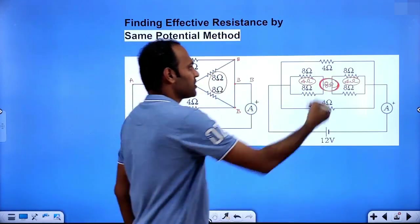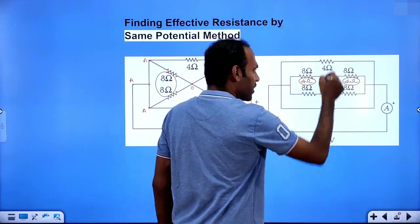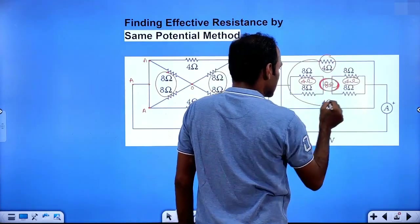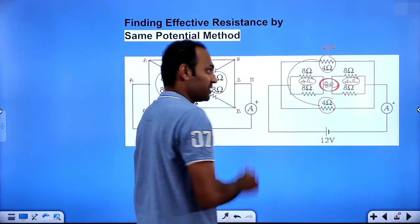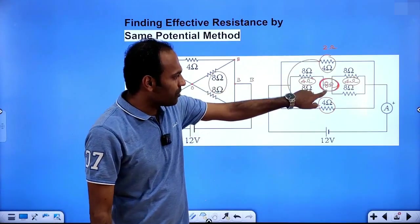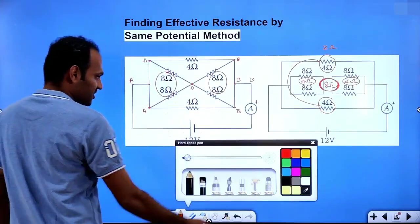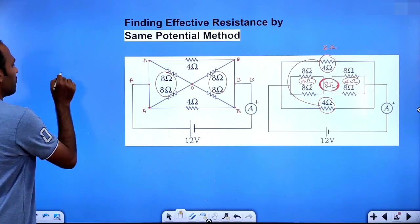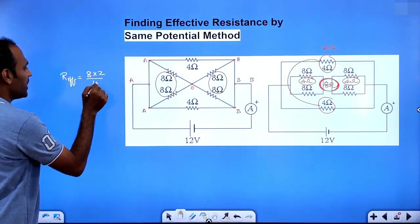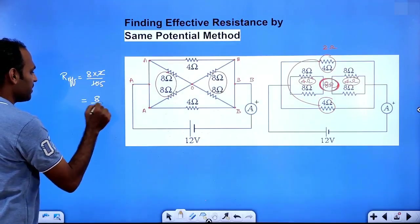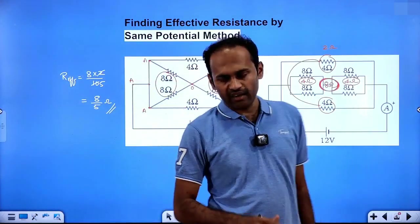Now, what about this 4 ohm and the other 4 ohm? We have to find the parallel combination of these two, which will be 2 ohm. So 2 ohm and 8 ohm are in parallel. Finally, the effective resistance will be equal to 8 into 2 divided by 10, which gives 8 divided by 5 ohm. This much will be the effective resistance of this circuit.